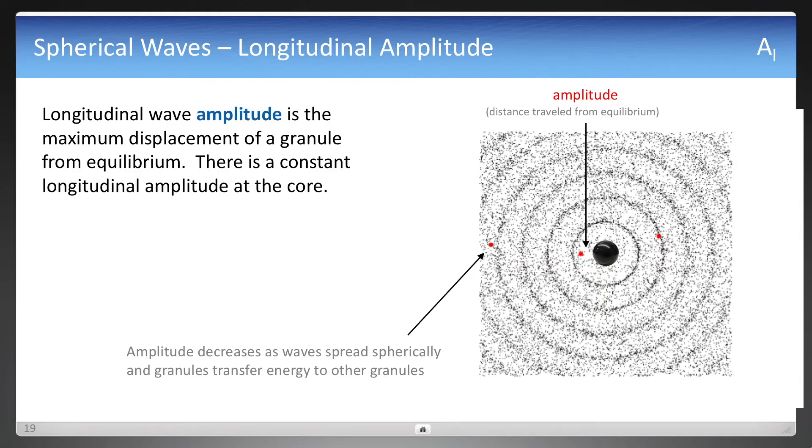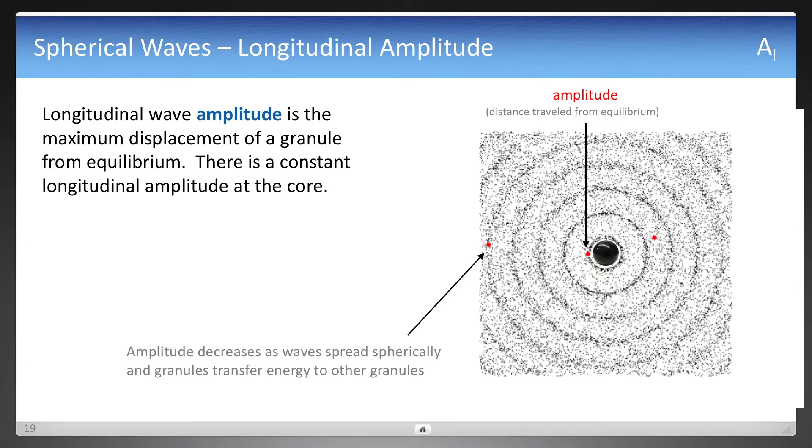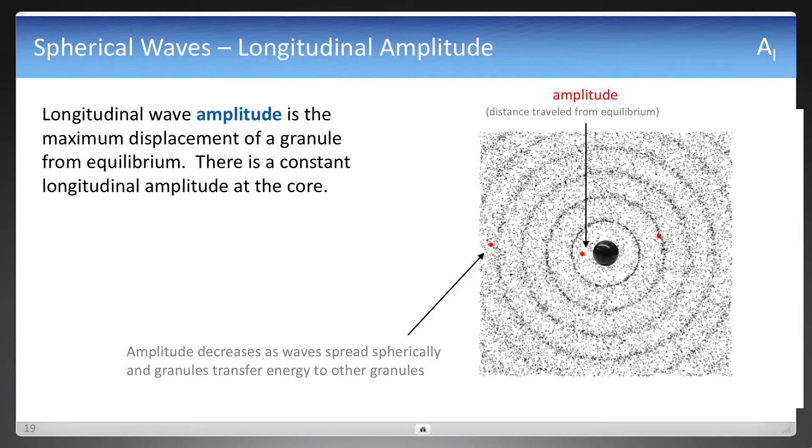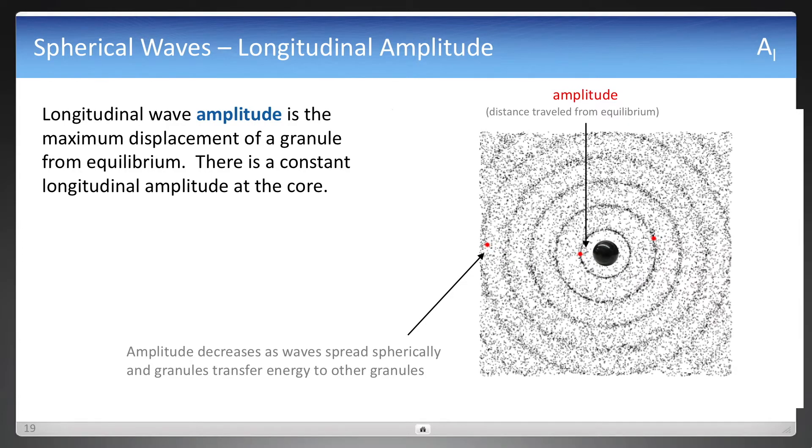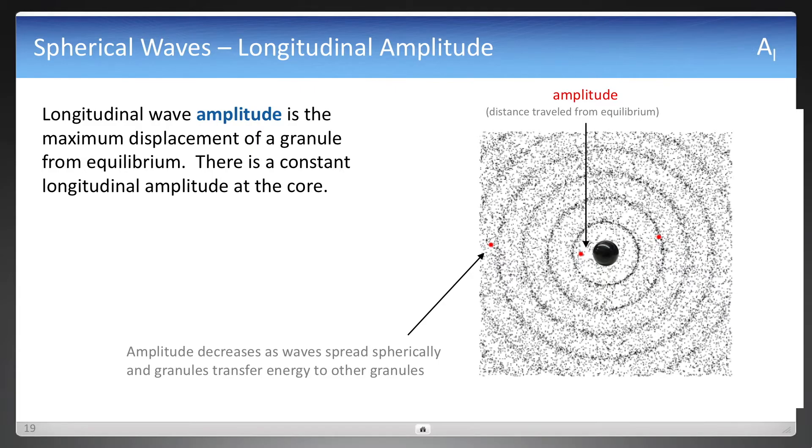Now while the wavelength remains the same, you can see that the distance that it's traveling is greater near the core and it is less as it moves out. That red dot to the far left there is traveling a smaller distance than one near the core.